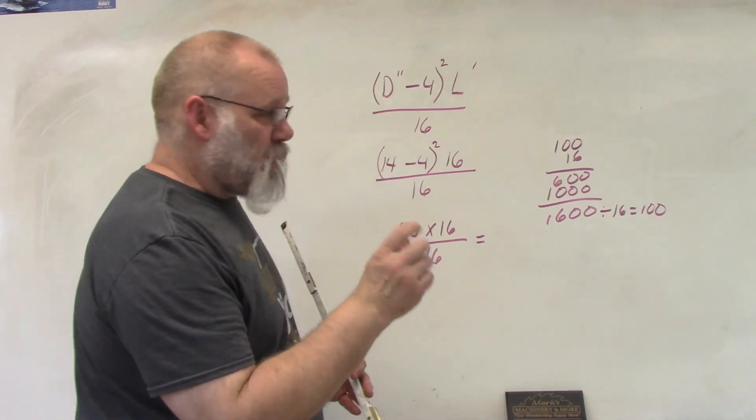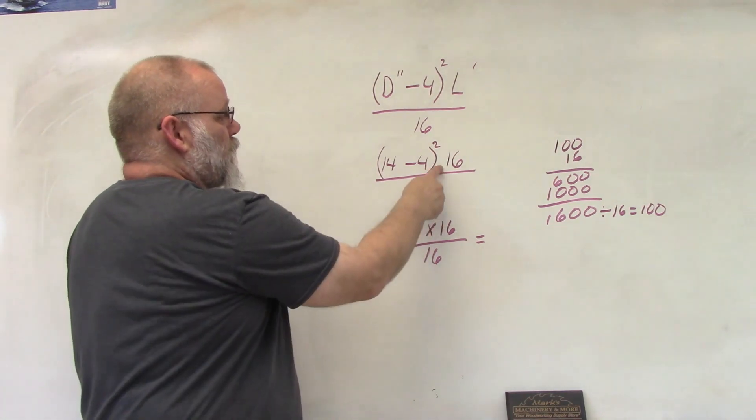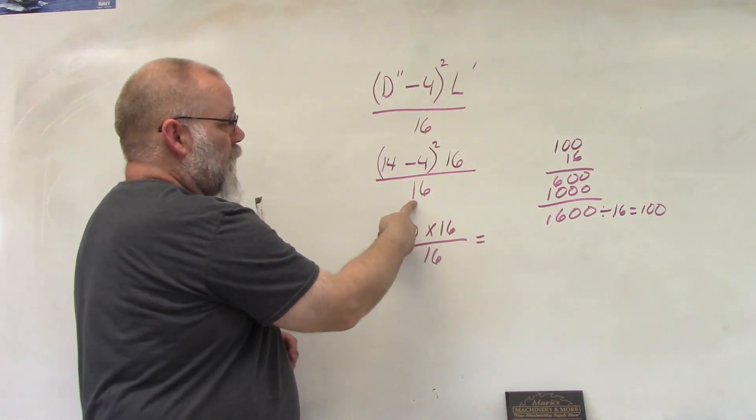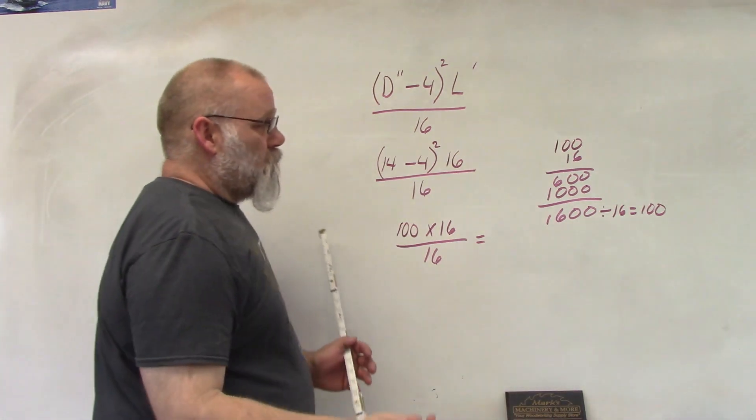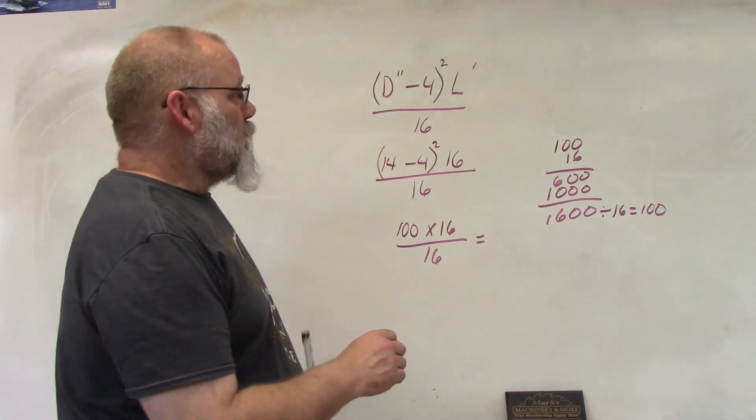It's subtracting off the sapwood and then multiplying by the length in feet, divided by 16, and gives you 100 board feet. So either you can use this folding rule or you can use this equation right here.